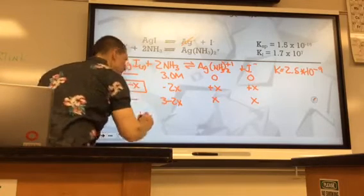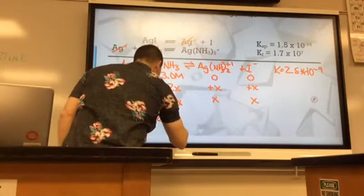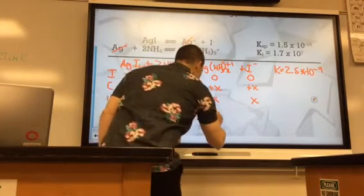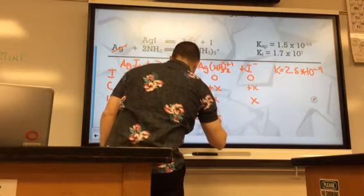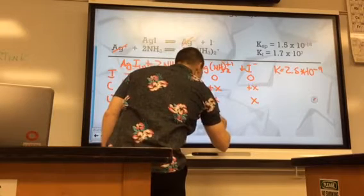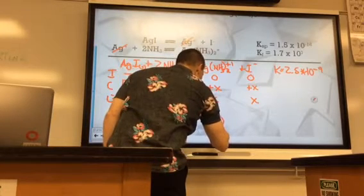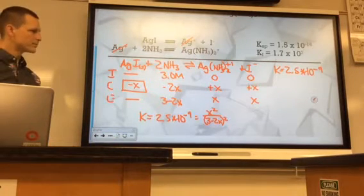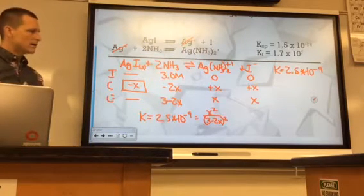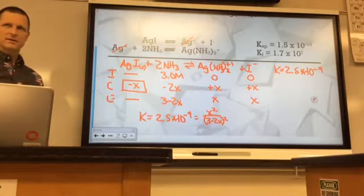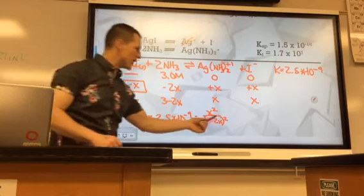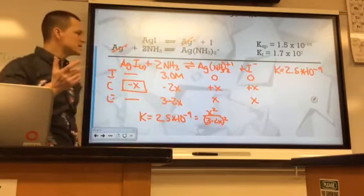So solving for X there, we're going to use the K. K equals 2.5 times 10 to the negative 9 equals X squared over 3 minus 2X quantity squared. Can we make the math easy? Get rid of the change in 2X. That thing right there. Is X a small number?